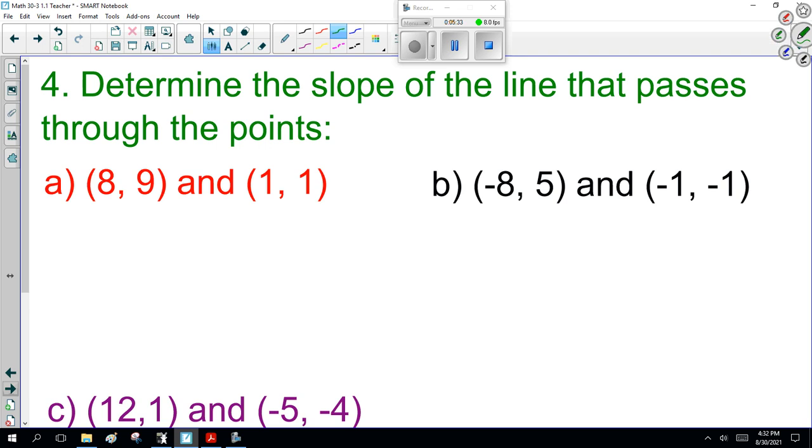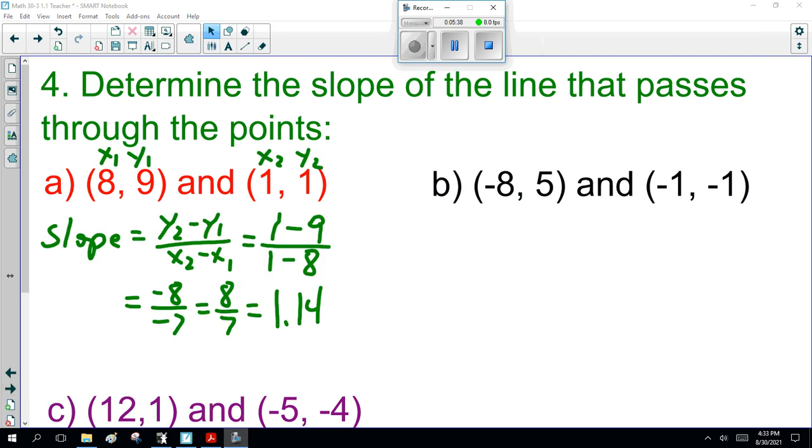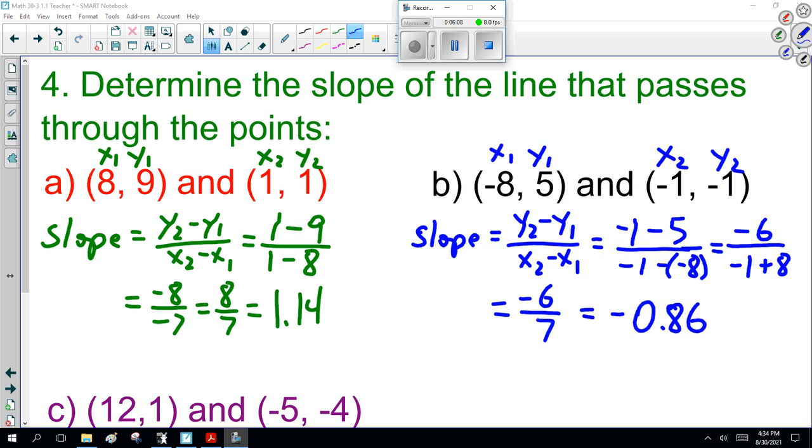For the first one, slope is y2 minus y1 over x2 minus x1. That's 1 minus 9 over 1 minus 8. I get minus 8 over minus 7. You can leave it like that, but really, negative divided by negative, the minus signs cancel out. It becomes 8 over 7, or 1.14. Any of those answers I'm happy with, as long as you put the numbers in the equation correctly.